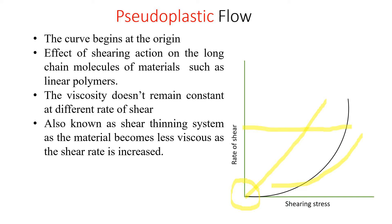We determine the apparent viscosity from the slope of the tangent to the curve. Suppose at a particular point I am drawing a tangent — the slope of that tangent to the curve will give the value of viscosity. The curved rheogram for this pseudo plastic material results from the shearing action on long chain molecules of the material, like linear polymers.